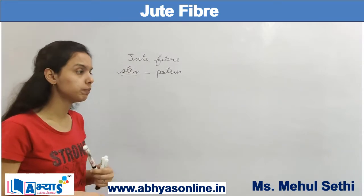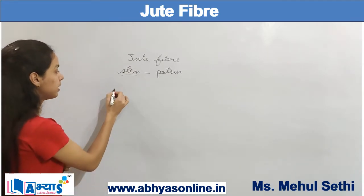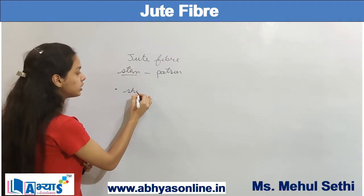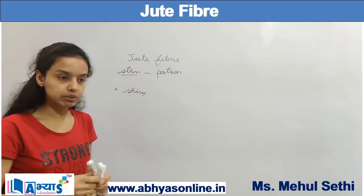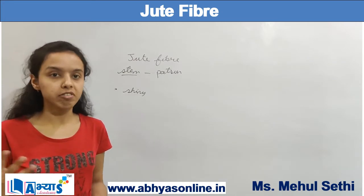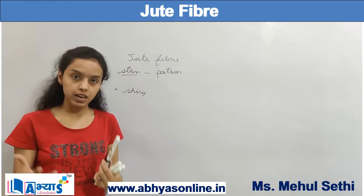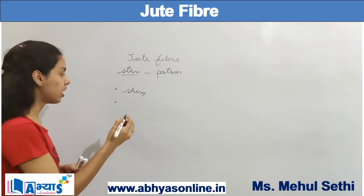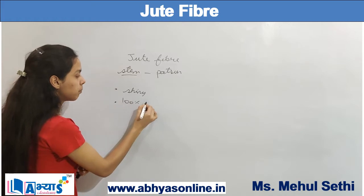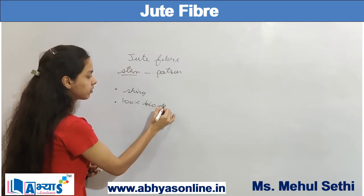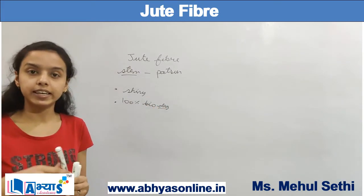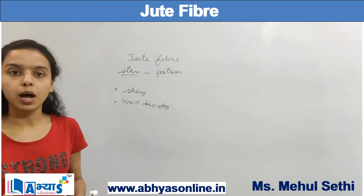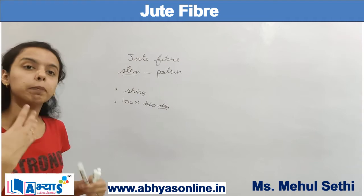There are some characteristics of the jute plant. The first is that it has a shiny surface, and because of this shine and luster it is sometimes referred to as the golden fiber. The next property is that it is 100 percent biodegradable, meaning it decomposes easily into the soil and will not cause any harm to or pollute the environment.